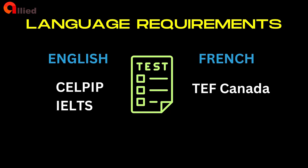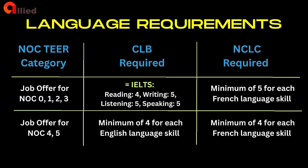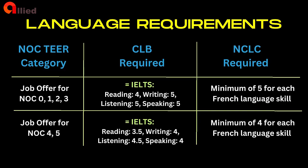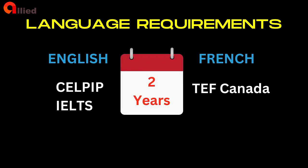Language requirements: when submitting your application, you must include results from an approved language test to demonstrate that you meet the language test score requirements. For job offers at different NOC TEER levels, the minimum Canadian Language Benchmark (CLB) or NCLC requirements are: CLB or NCLC 5 for TEER 0, 1, 2, or 3; and CLB or NCLC 4 for TEER 4 or 5. You must submit results from a designated language testing organization — such as CELPIP, IELTS, or TEF — and results must be less than two years old when you apply.